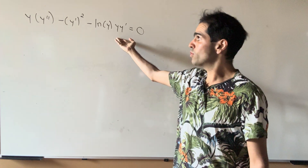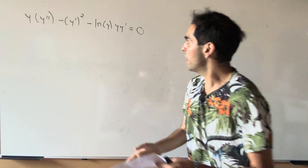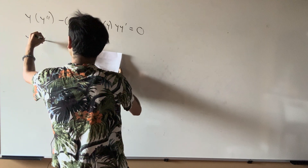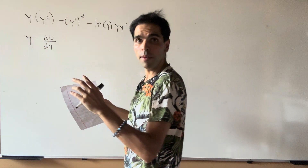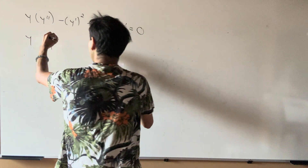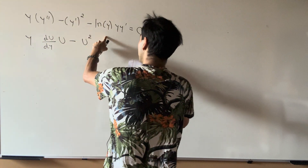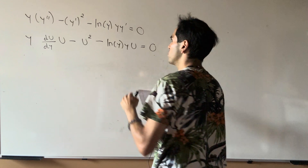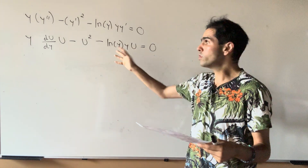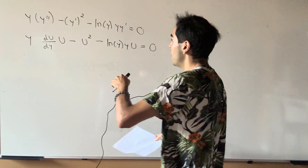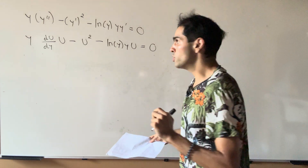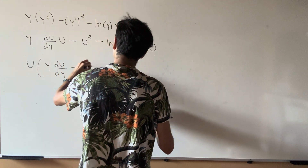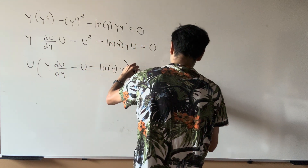To remind you, this is what we started with. Using that substitution, we transform the differential equation: y times (du/dy times y prime) minus y prime squared minus ln of y times y times y prime equals zero, where y prime is another name for u. We can then factor out u, giving: u times (y du/dy minus u minus ln(y) times y) equals zero.